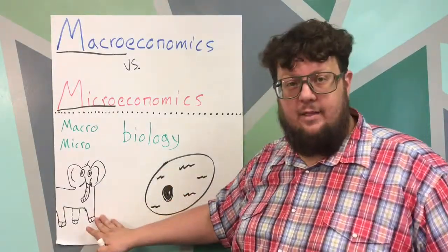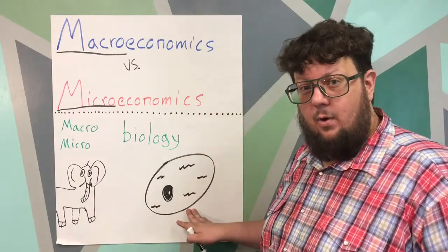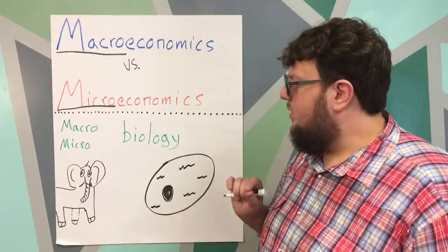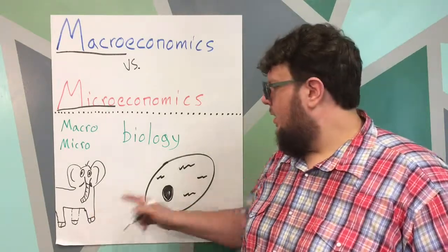I've drawn a picture of Tusco the elephant here and Glubar the single-celled organism. So who do you think represents macro biology? Tusco or Glubar?